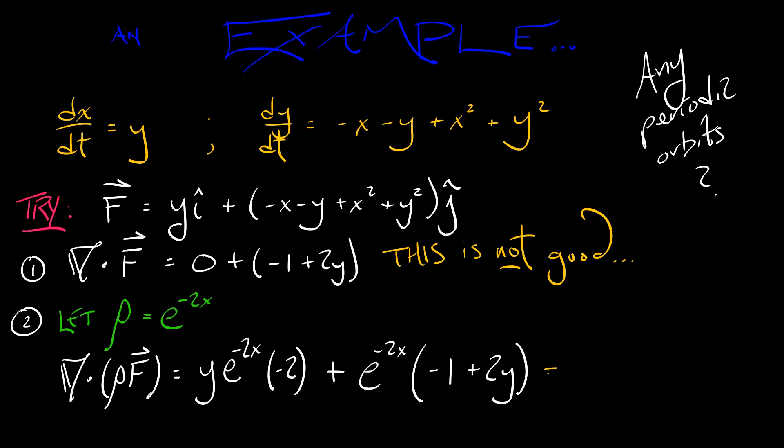Ah, look at what happens. We have a whole bunch of cancellation, and I get e to the minus 2x with a negative sign out in front. That is never zero. And so, by Bendixson-Dulac, this means no periodic orbits whatsoever in this system.